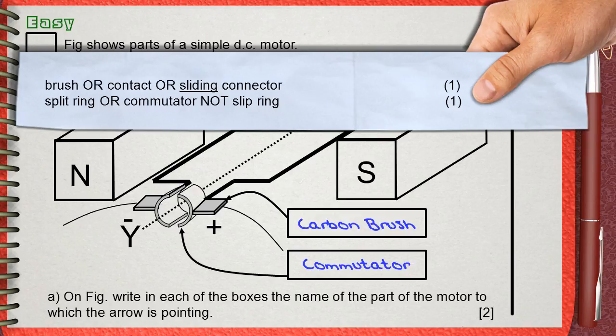For the lower box you can say split ring or commutator, but do not say slip rings, because slip rings are not for the motor. Slip rings are for the AC generator. So you cannot say slip rings.